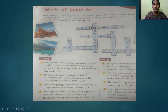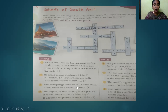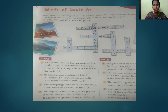Seventh question: This archipelago — meaning a group of islands — consists of 26 coral atolls. It was ruled by a sultan till 1968. The answer is Maldives.